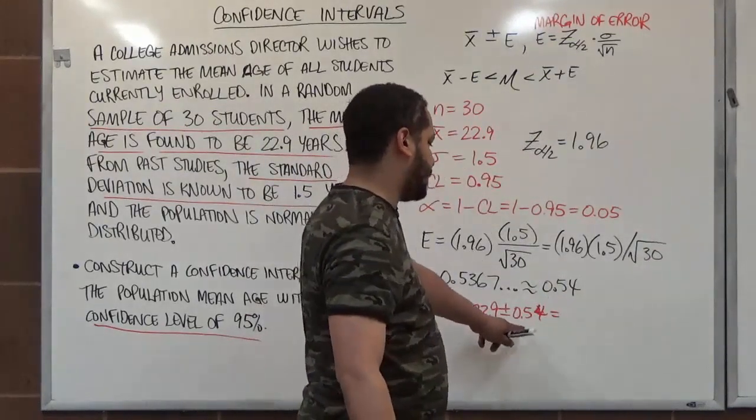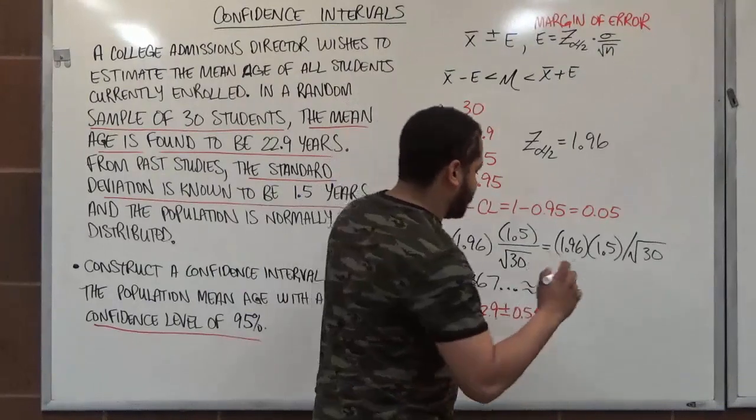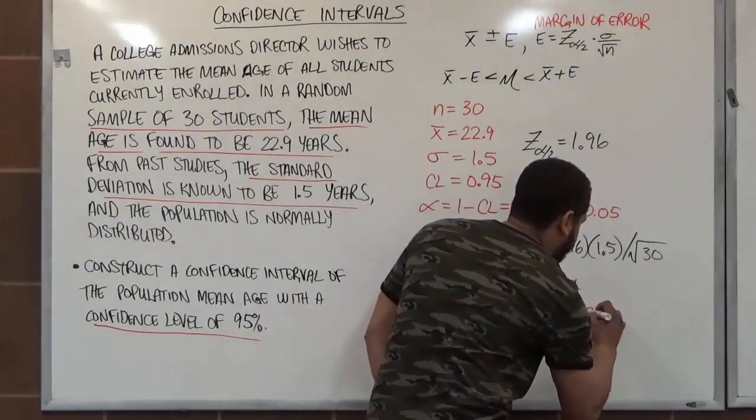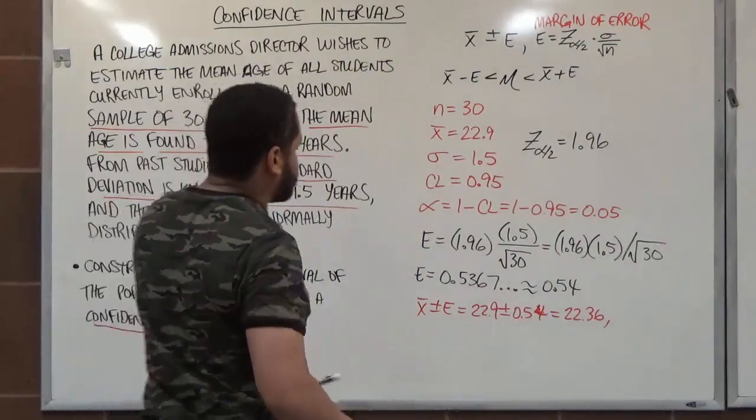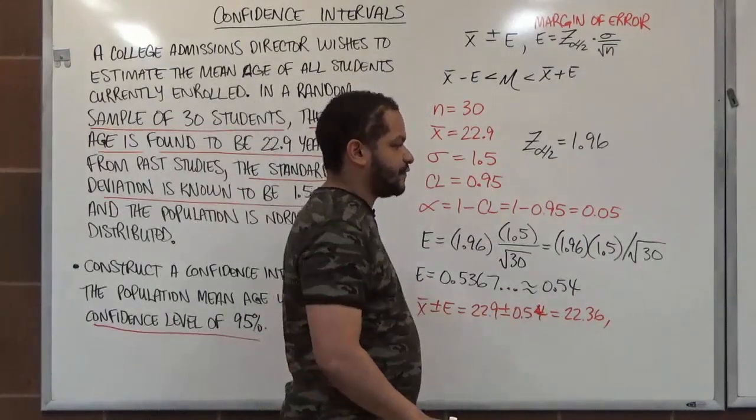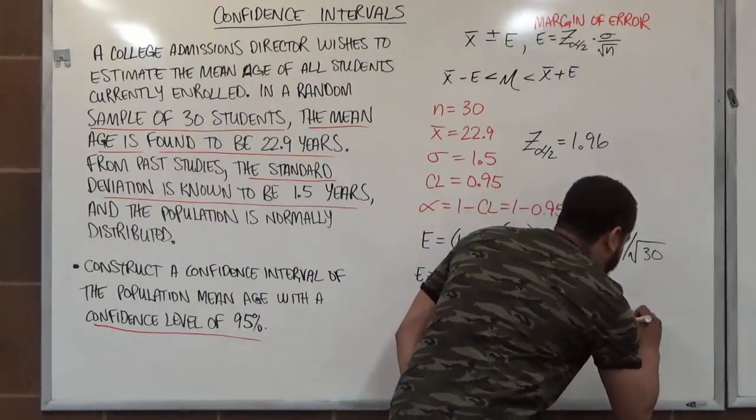22.9 minus 0.54. If you're calculating this with a calculator, we get 22.36. There's the first beginning of the interval. When we do 22.9 plus 0.54, we get 23.44.